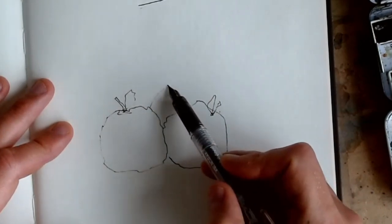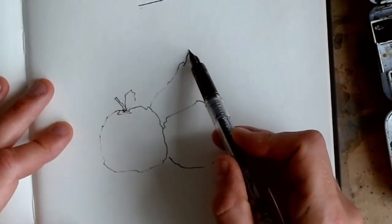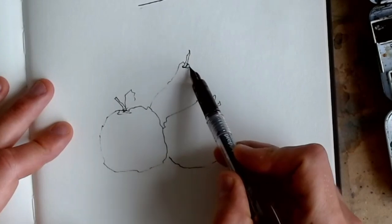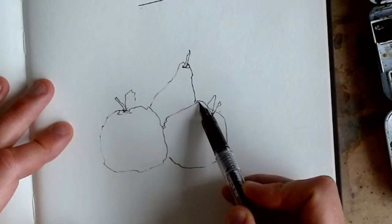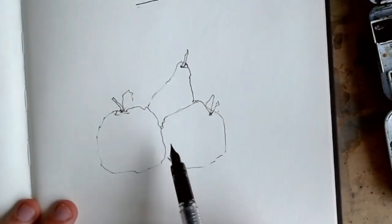And then maybe let's get a pear going in the background. Pears, I reckon my favorite fruit. There we go. So the weight of line is all the same everywhere.